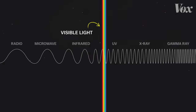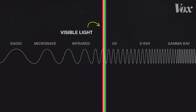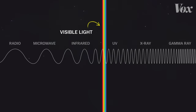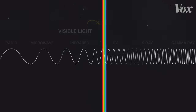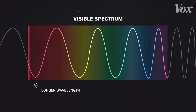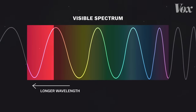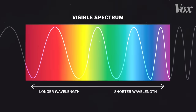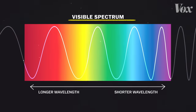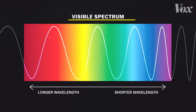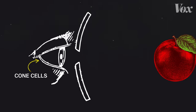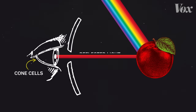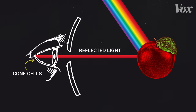This is all the light in the universe that we can see — just a fraction of what's out there. Most frequencies of light are actually invisible to us. The light we can see appears red at its lowest frequencies and violet at its highest. This is called the visible spectrum, and we see it because cells in our eyes called cones interpret light reflecting off of objects.